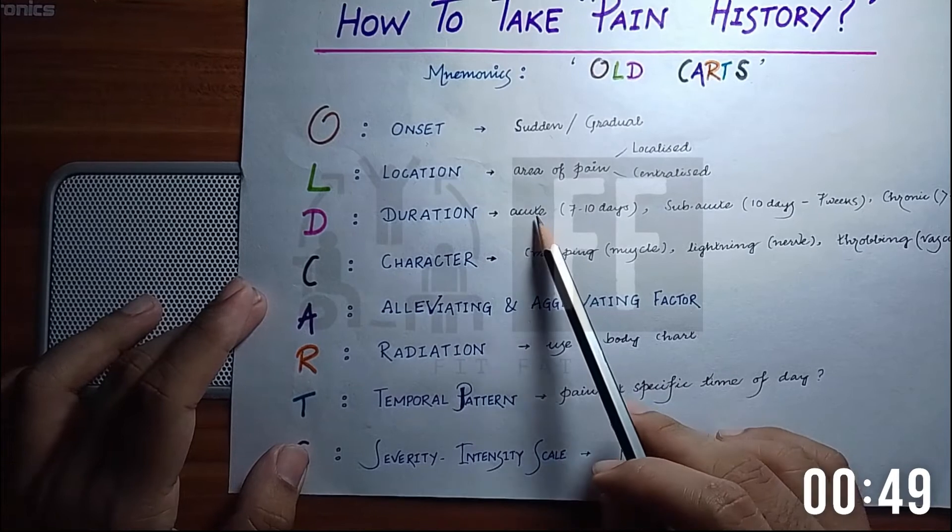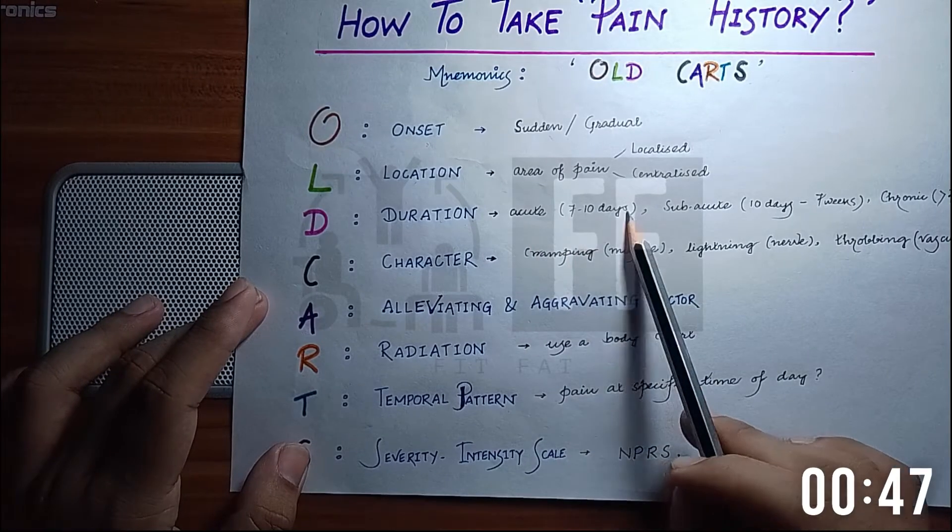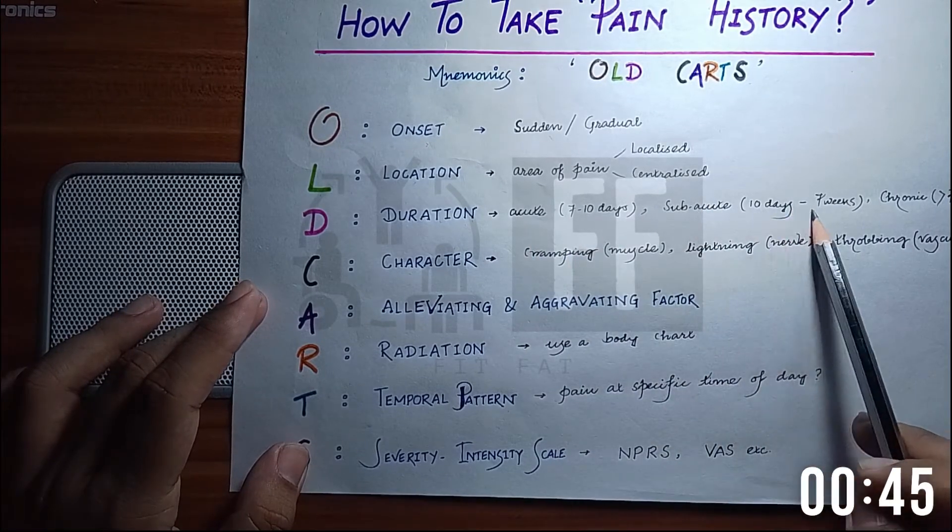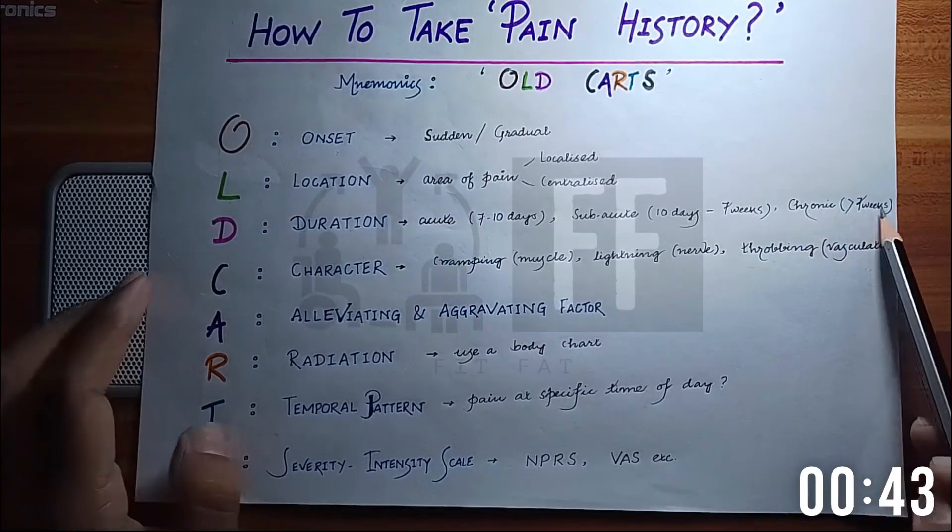D for duration of the pain. In acute pain, it lasts seven to ten days. For sub-acute, it's ten days to seven weeks, and for chronic, it's greater than seven weeks.